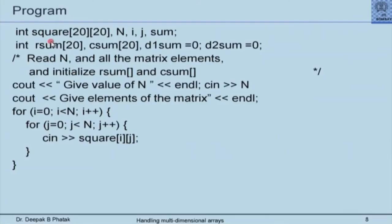Here is a program — I will gloss over it and you can read it more leisurely as I will upload it to Moodle. I define a 2D array 'square' of size 20×20, and two additional arrays to store row sums and column sums, each of size 20. There are only two diagonals, so I use two variables d1_sum and d2_sum. I read the value of n, then read all matrix elements, initializing row sum and column sum to 0.